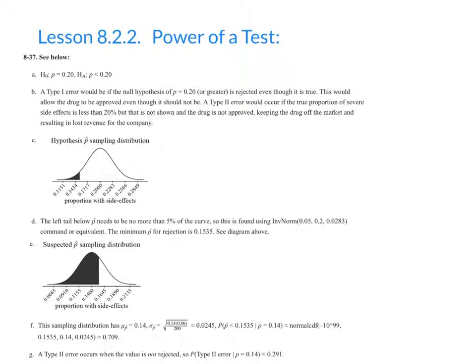Section 8.2.2 does include the calculation of the power of a test. Problem 8.37 does a complete walkthrough for the calculation of type 2 error and power. This is a time-consuming, complex, multi-step process, and you want to be ready to provide encouragement and perhaps scaffolding where appropriate.